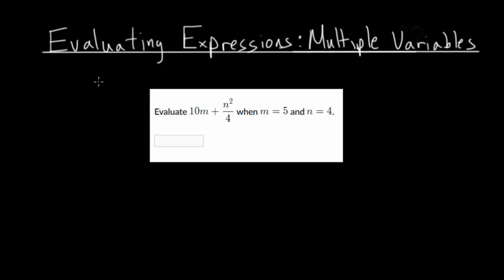For this video, I'd like to talk about evaluating expressions with multiple variables. In a previous video, we looked at different examples of evaluating expressions. This video will specifically focus on when we have multiple variables — like both m and n — and sometimes we'll have 2, 3, or 4, it really just depends on the situation. Some problems will deal with normal expressions, and some will deal with fractions and decimals, so we'll look at both situations.